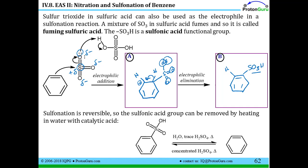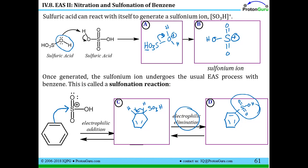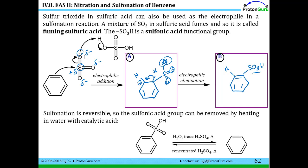One important point about the classic sulfonation reaction with sulfuric acid: water is lost when generating the electrophile, and each of these steps is reversible. So if you wanted to take benzene sulfonic acid and convert it back to benzene by removing the sulfonic acid group, you could add water with sulfuric acid and heat to get back to benzene. This makes sulfonation the most reversible of the electrophilic aromatic substitution reactions we'll discuss. The presence of water pushes the reaction back toward benzene, so to make the sulfonic acid product you really want to use concentrated sulfuric acid with no water present.